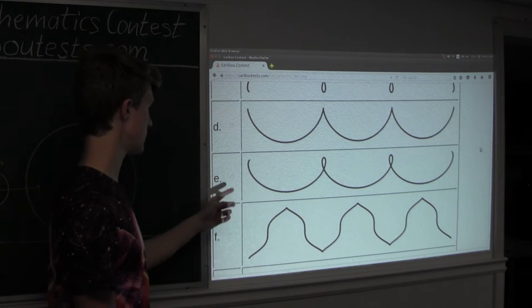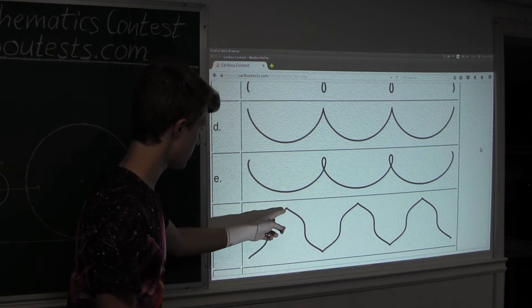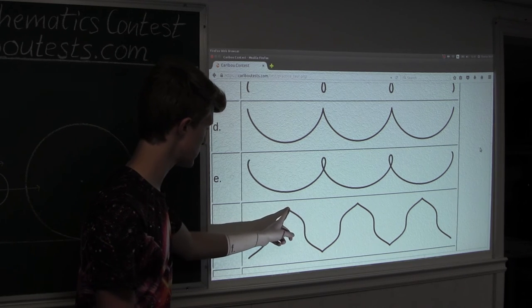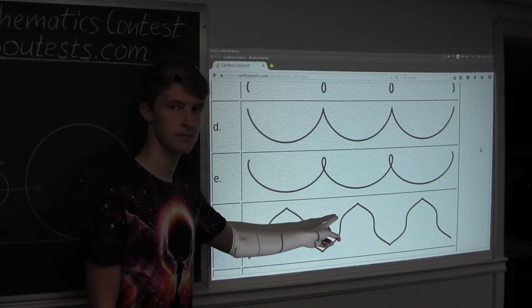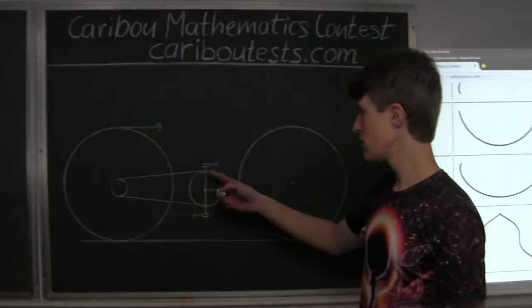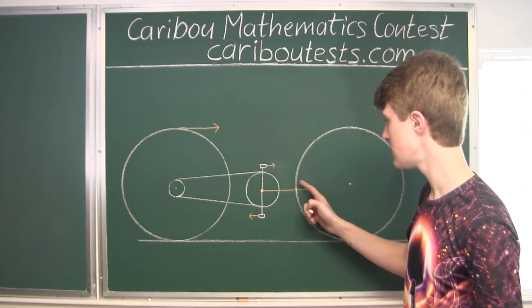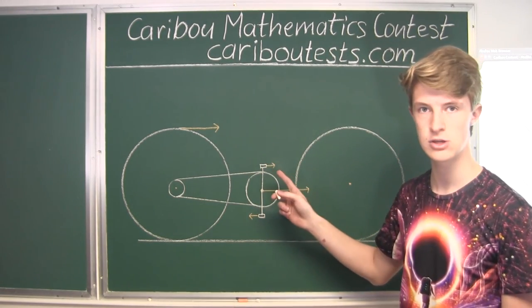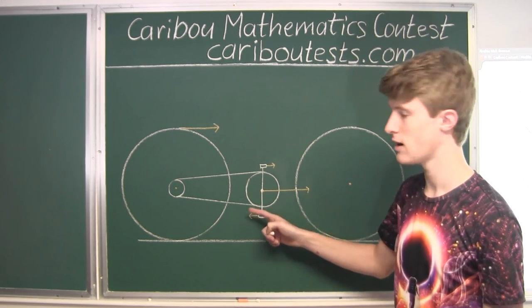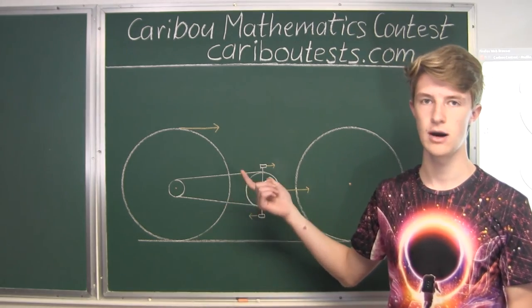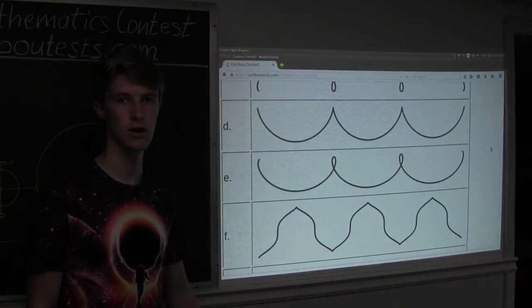Option F shows that when the bike pedal is at the top, its path is symmetric to when it is at the bottom. But looking at the vectors, when the pedal is at the top both vectors are positive — going in the same direction — whereas when it's at the bottom you find the difference since it is going in the opposite way. Therefore they would not be symmetric and option F cannot be correct.